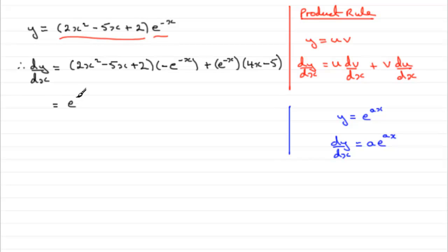So I would take e to the minus x out, I'd have a square bracket, and then seeing that this term was negative, I would go for this term because it's positive, first of all. So I'd have 4x minus 5, which I could put in brackets, but there's no need to really.